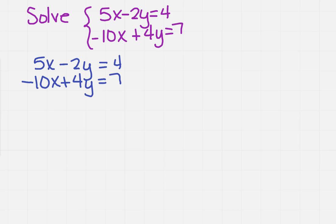So let's see. The signs are already different, so I just need to multiply what? Well, of 2 and 4, the least common multiple is 4. So I'm going to multiply the top equation by 2.